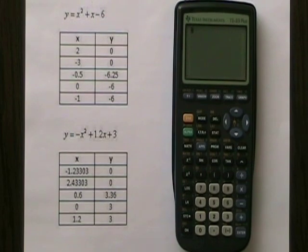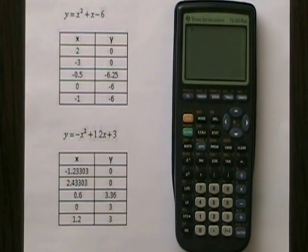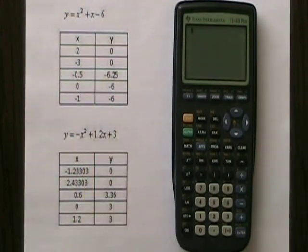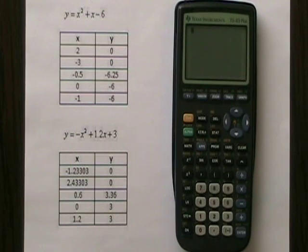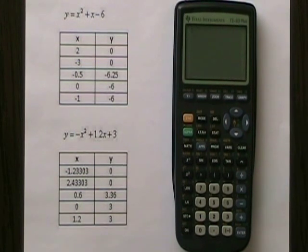The first thing we're going to do is enter the equation on the top into the graphing calculator and look at its graph. As you can see, I've already prepared a table of values that shows the five key points: the zeros, the vertex, the y-intercept, and the point symmetric to the y-intercept, also known as the mirror point.